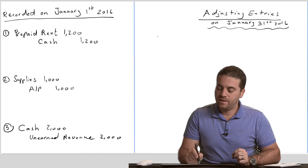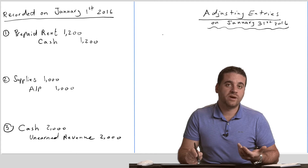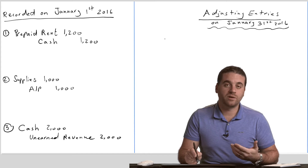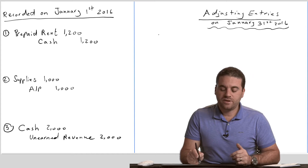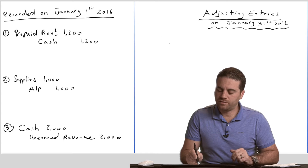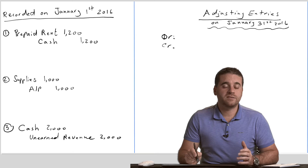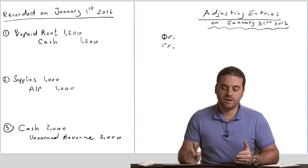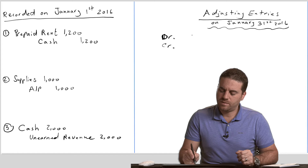At the end of January 31st, we have to record an adjustment to the prepaid rent. When we consume $100, we drop it down by $100 — that's what we call an adjustment, adjusting the ending balance. So prepaid rent has to decrease by $100, meaning we're going to credit prepaid rent. The debit side will be an expense account — the best name when it comes to prepaid rent is rent expense, so we debit rent expense.